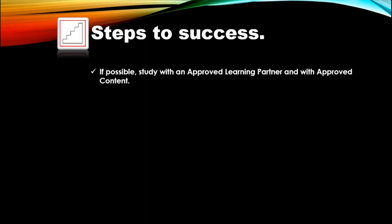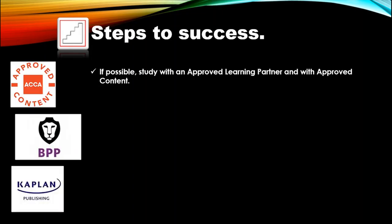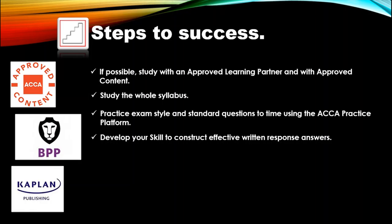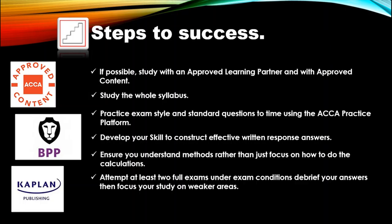Next, let us see what are the steps for success in the Audit and Assurance exam. First, if possible, study with an approved learning partner such as BPP or Kaplan. Study the whole syllabus. Practice exam-style questions to time using the ACCA practice platform. Develop your skills to construct effective written response answers. Ensure you understand methods rather than just focusing on calculations. Attempt at least two full exams under exam conditions, debrief your answers, and then focus your study on weaker areas.